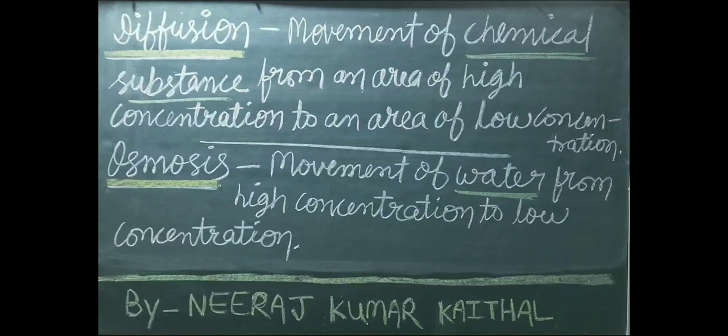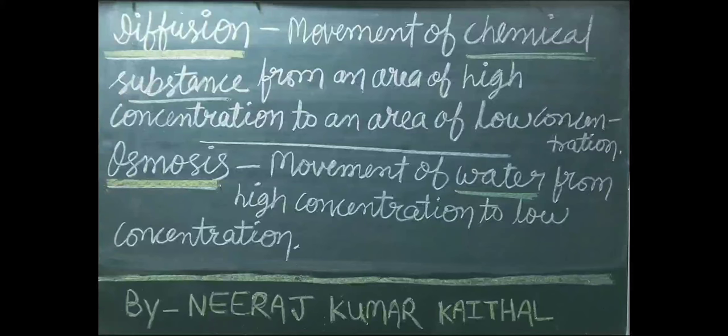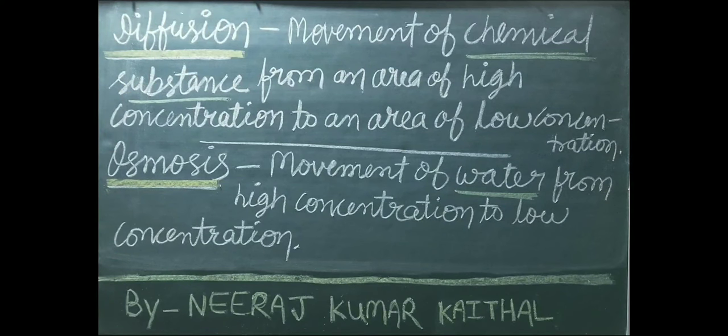Definition of Diffusion: movement of a chemical substance from an area of high concentration to an area of low concentration. Diffusion ka matlab hai chemical substance ka high concentration area se low concentration area ki taraf jaana — yaad rakhiye: chemical substance. Definition of Osmosis: movement of water from high concentration to low concentration. Osmosis mein yaad rakhiye: water.